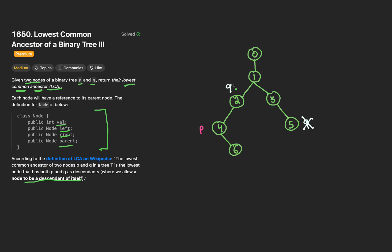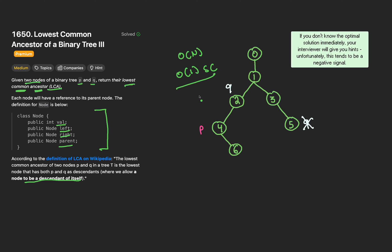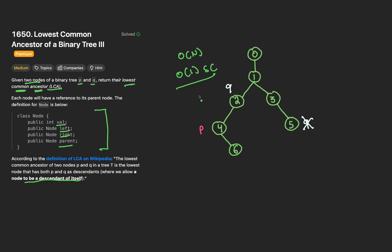There is an implementation that requires extra space of O(N), but Meta will almost always ask for the optimized solution of O(1) constant space complexity. So we'll opt for that solution. Don't waste too much time explaining the brute force in the interview if you already know the optimal one. And as a heads up, don't worry if you didn't figure out the optimized solution yourself — there's a trick to it that isn't very obvious, but once you see it, you won't be able to unsee it.